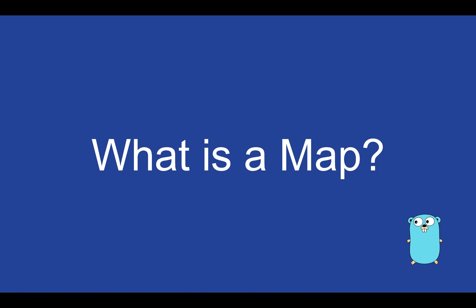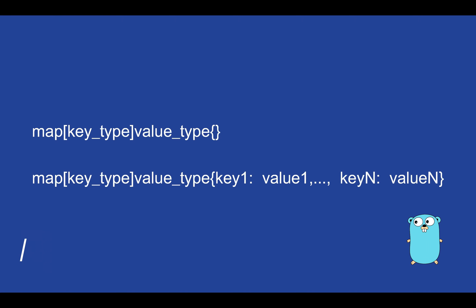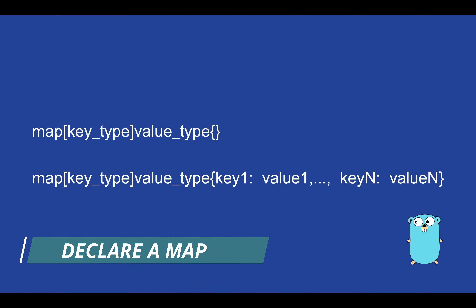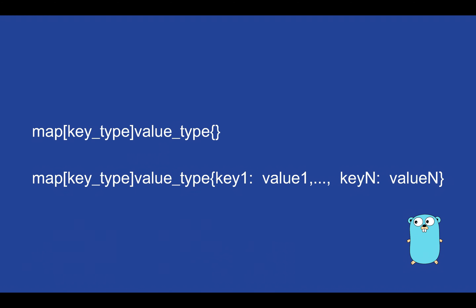What is a map? A map is a data structure where you can store elements as key-value pairs. The keys are unique identifiers that are associated with each value inside a map. There are two ways to create and initialize a map in Go, with or without the use of the make function.